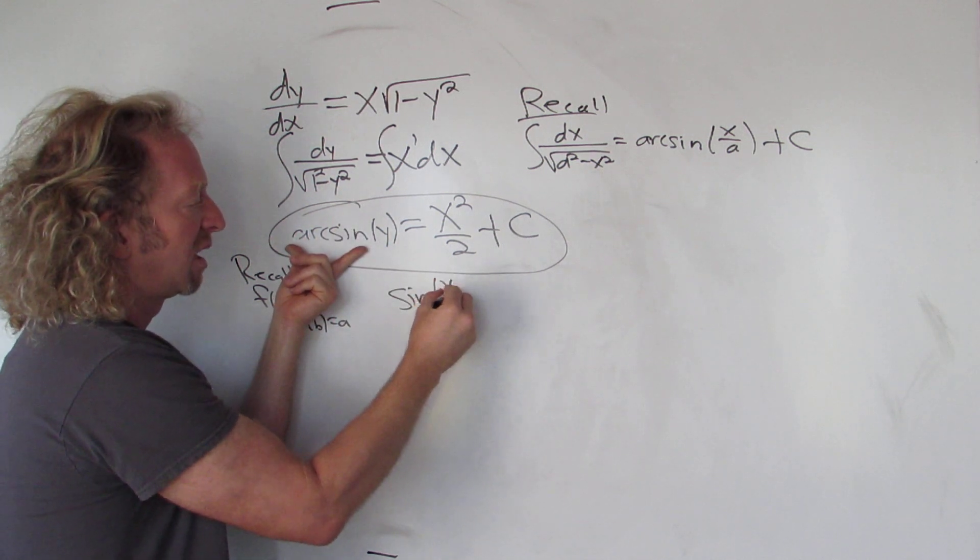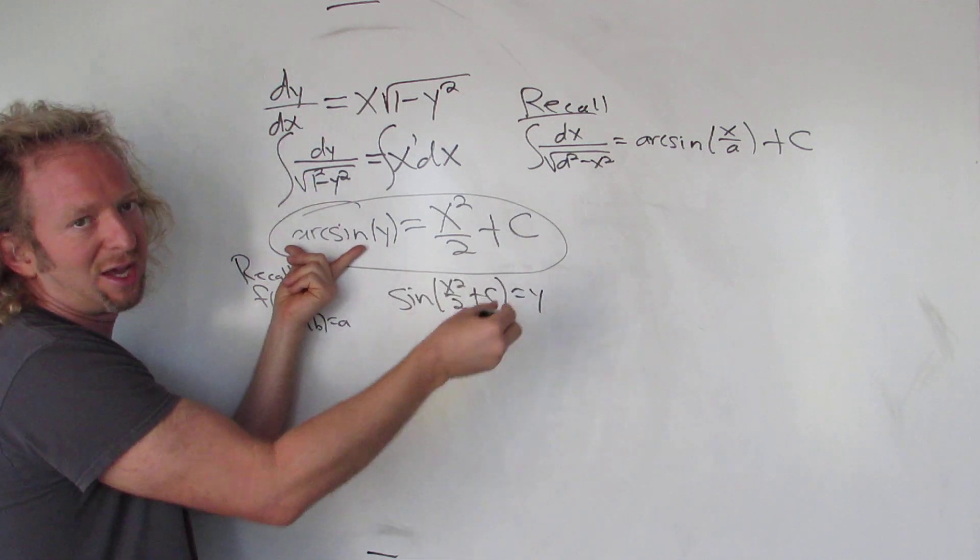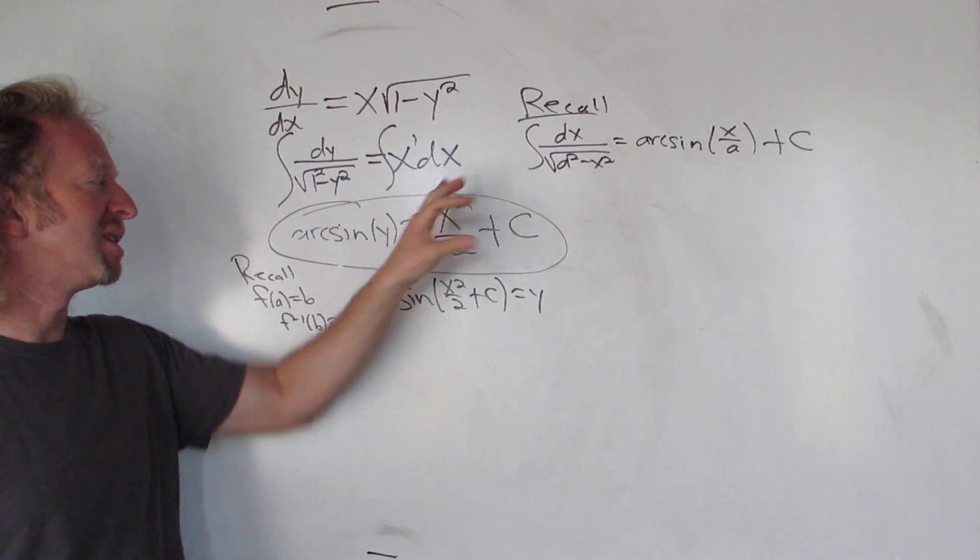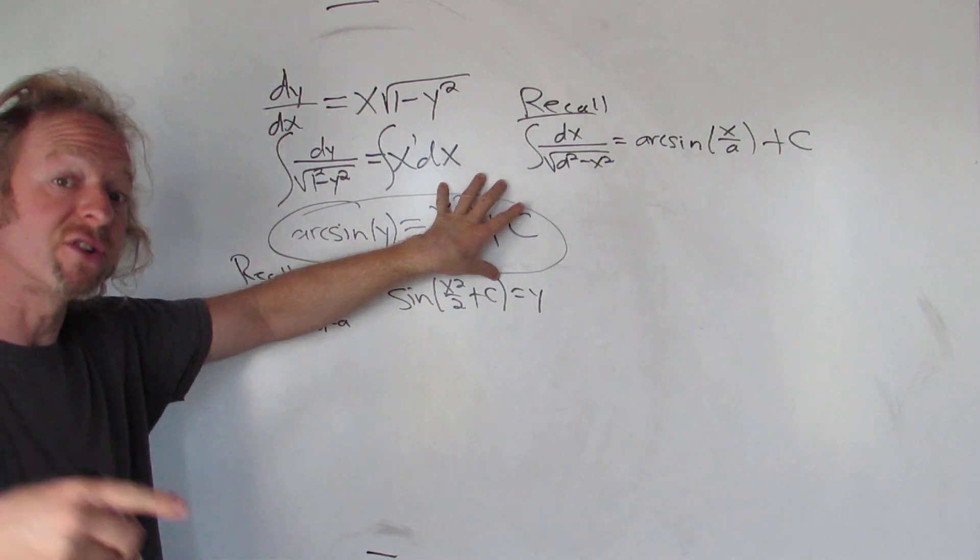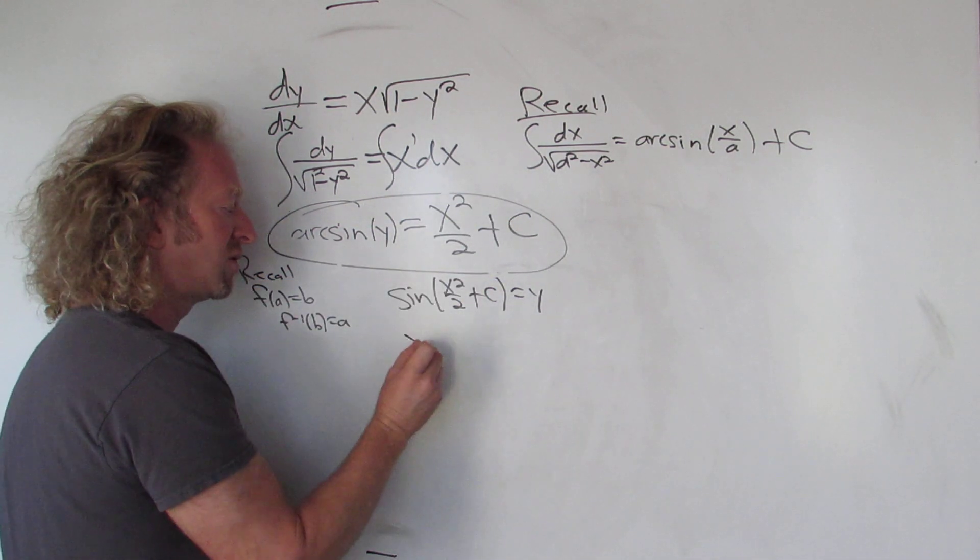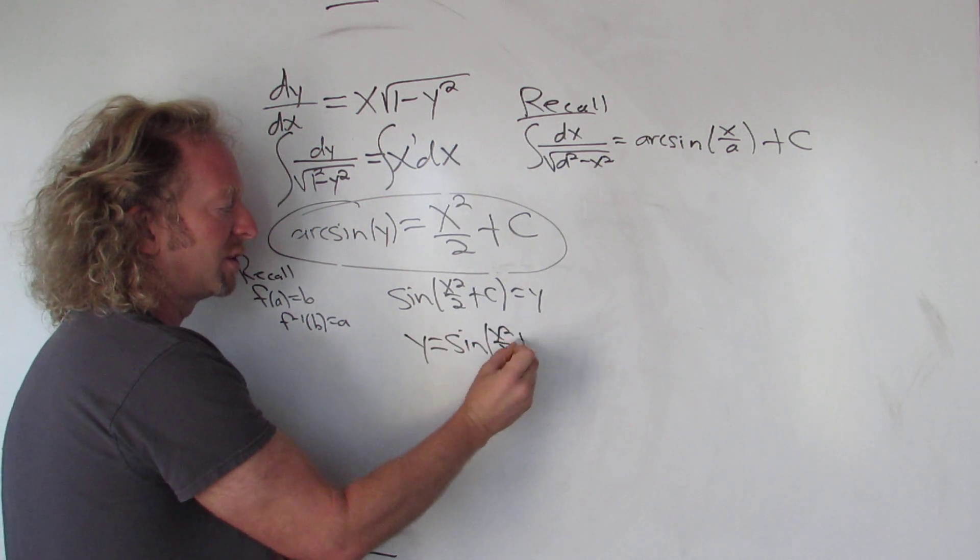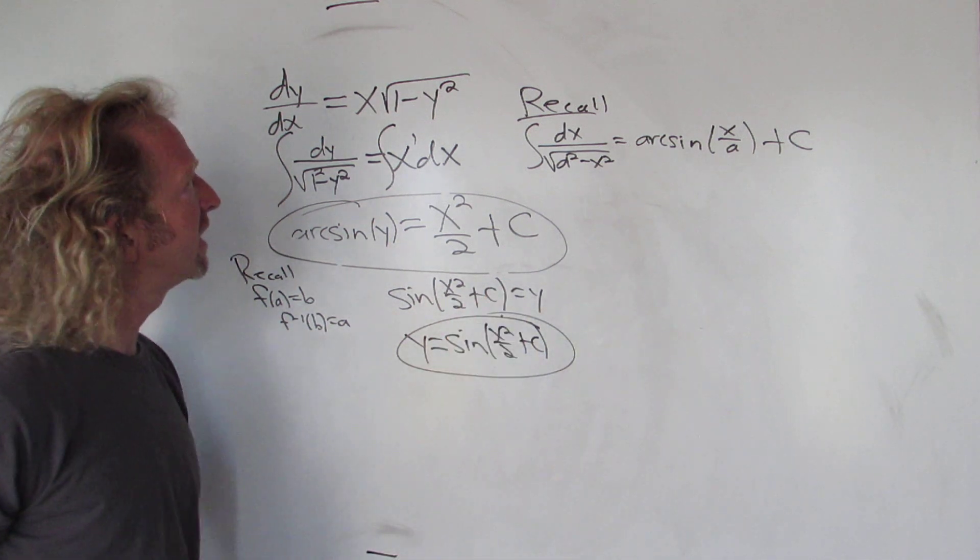So here, arcsin takes y and sends it to this, so the inverse of arcsin is sine. So sine takes x squared over 2 plus c and sends it back to y. And so that would be the explicit solution. Again, arcsin takes y and sends it to this, so the inverse of the arcsin, which is sine, takes this and sends it back to y. So that would be the answer, and you could put the y on the left if you want to make it look better. So that's it.